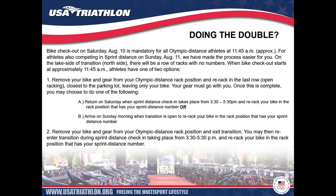For athletes doing the double — both Olympic and sprint distance — we've tried to make the transition as easy as possible. After completing Olympic distance on Saturday, you have two options. Option one: remove your biking gear from your Olympic distance rack position, and there will be open racking on the back row of transition closest to the parking lot where you can leave only your bike — your gear must go with you. You'll need to physically move your bike yourself; staff will not do this for you.